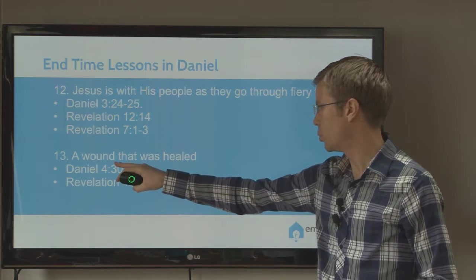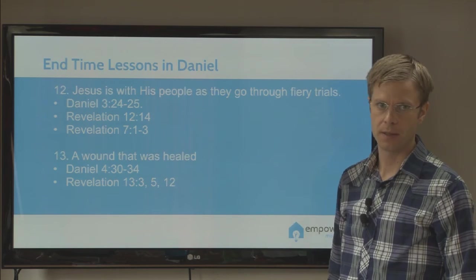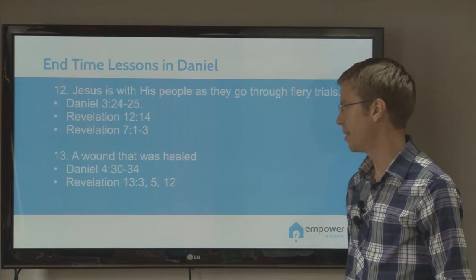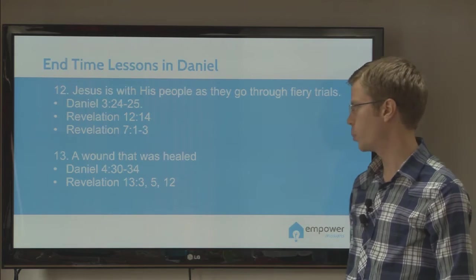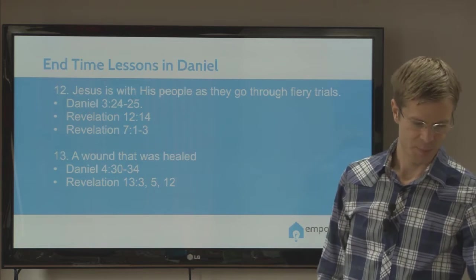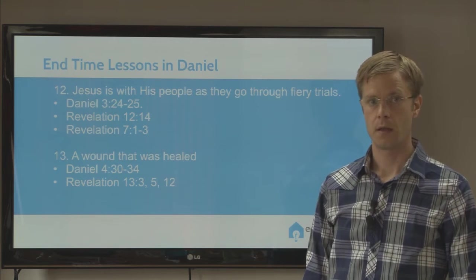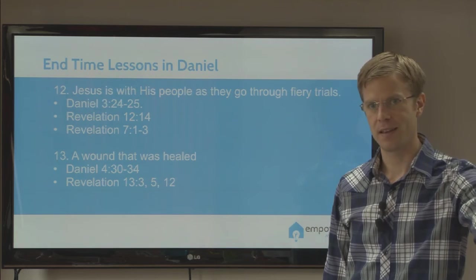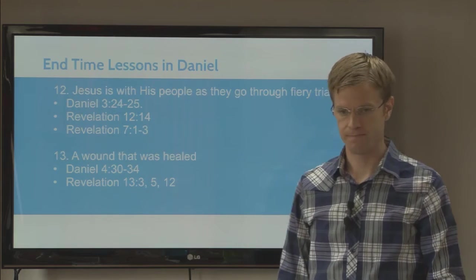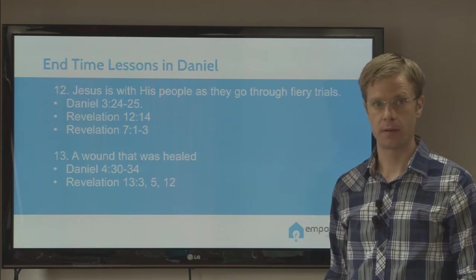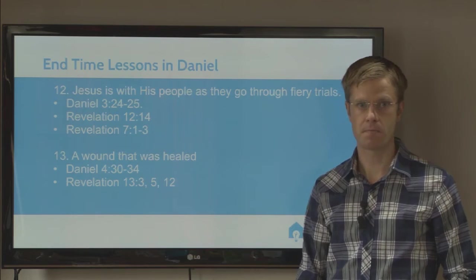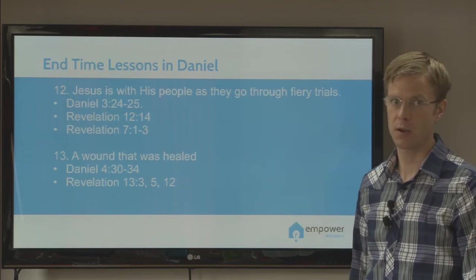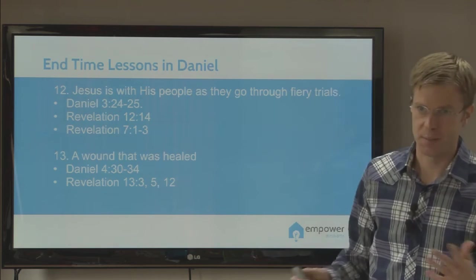Point 13: the wound that was healed. We know Revelation 13 says the papacy — the Antichrist — received a deadly wound but was healed. Do we see a parallel in Daniel chapter 4? Nebuchadnezzar's kingdom was taken from him — he was eating with the beasts of the field. But then he was reinstated in the kingdom. So in a sense Babylon received a wound that was healed, which is quite an interesting parallel.